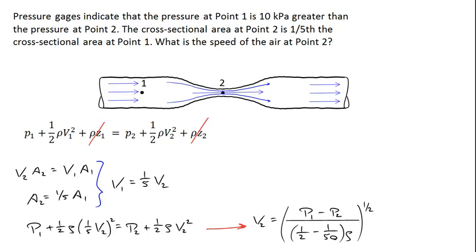And double check my algebra but when I solve for V2 I get the pressure difference divided by this term, this difference 1/2 - 1/50 times ρ.